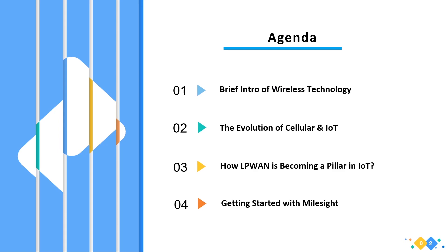This webinar on IoT fundamentals is especially for beginners. Before going into the details of Milesight, we will first explore what short-range and wide-area communication networks are, what happens when cellular meets IoT and the story behind their evolution, and we will also explain how LPWAN is becoming a pillar in IoT, and then look at Milesight products and services quickly.